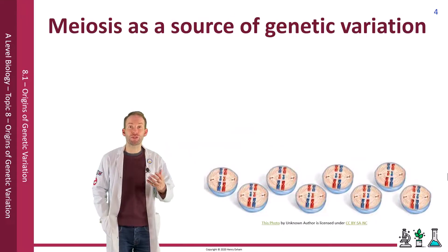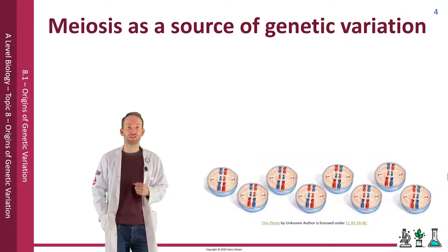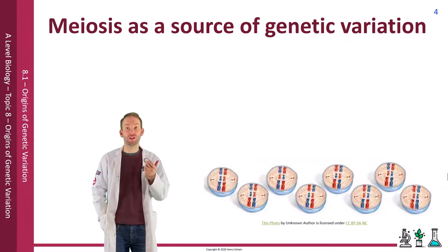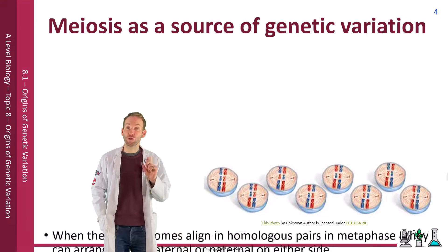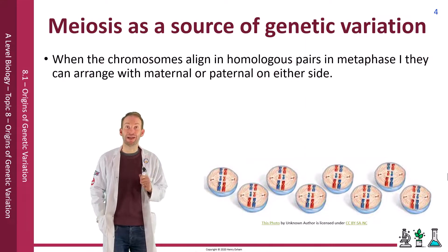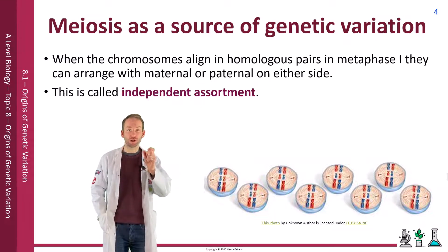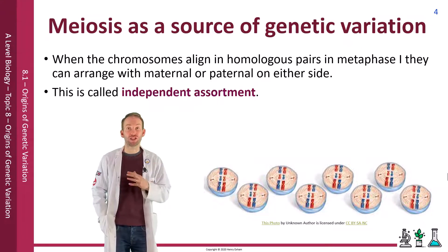Meiosis is used to produce haploid gametes in the sex organs. When the chromosomes align in homologous pairs in metaphase one, they can arrange with maternal or paternal on either side. This is what we call independent assortment. This creates over 8 million combinations of how the chromosomes could be assorted in the final gametes, creating huge amounts of variation.